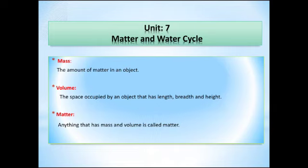First of all we will see terms like mass. It is the amount of matter in an object. Volume is the space occupied by an object that has length, breadth and height. Now we can define matter as anything that has mass and volume is called matter.